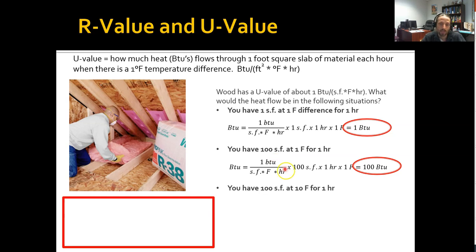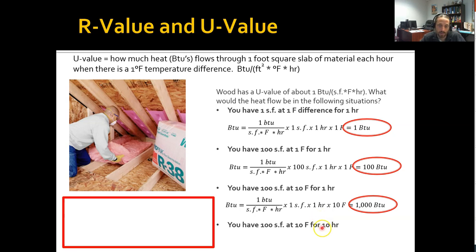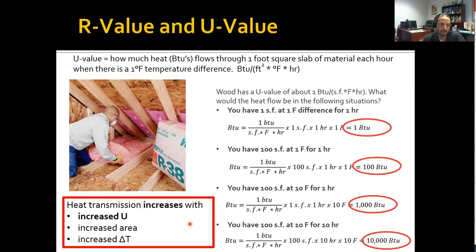With 100 square feet but an increased delta T, that increases heat loss. Increase surface area — increase heat loss. Increase delta T, the temperature difference on each side — increase heat loss. And if you increase the amount of time, say 10 hours at a 10-degree delta with 100 square feet, that also increases heat loss. So: increase surface area, increase delta T, and increase time — all increase your heat loss.